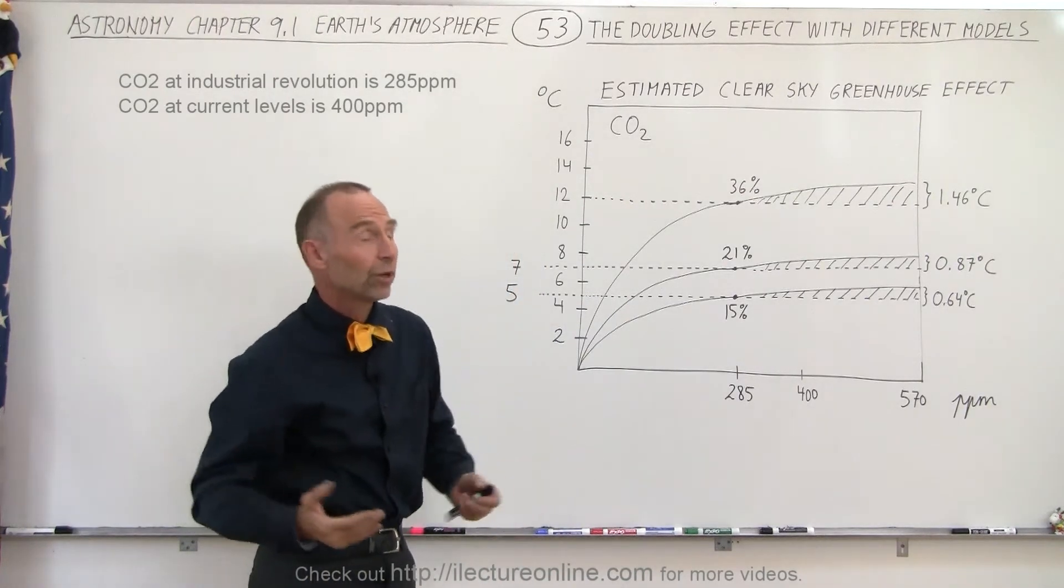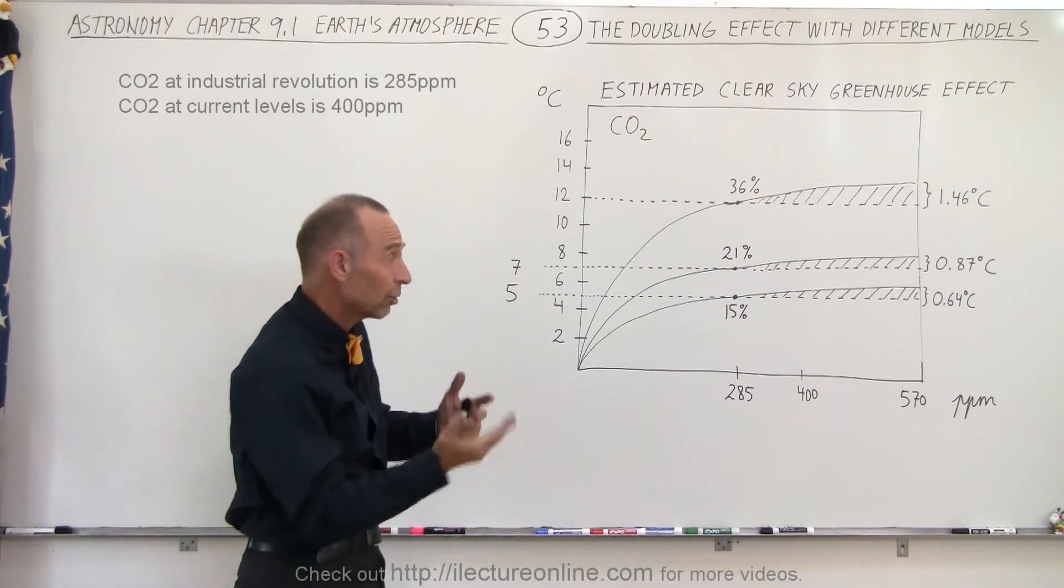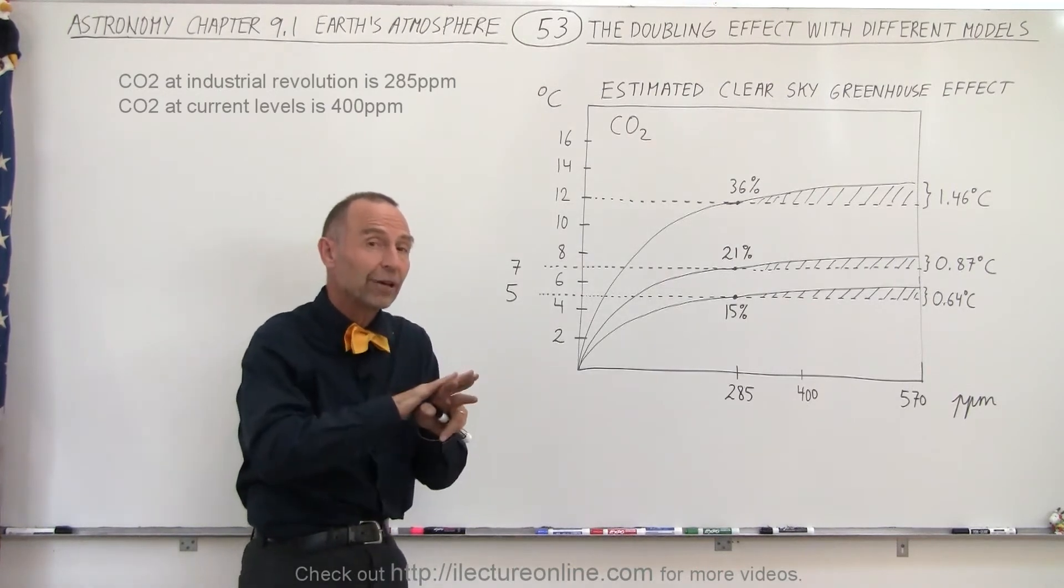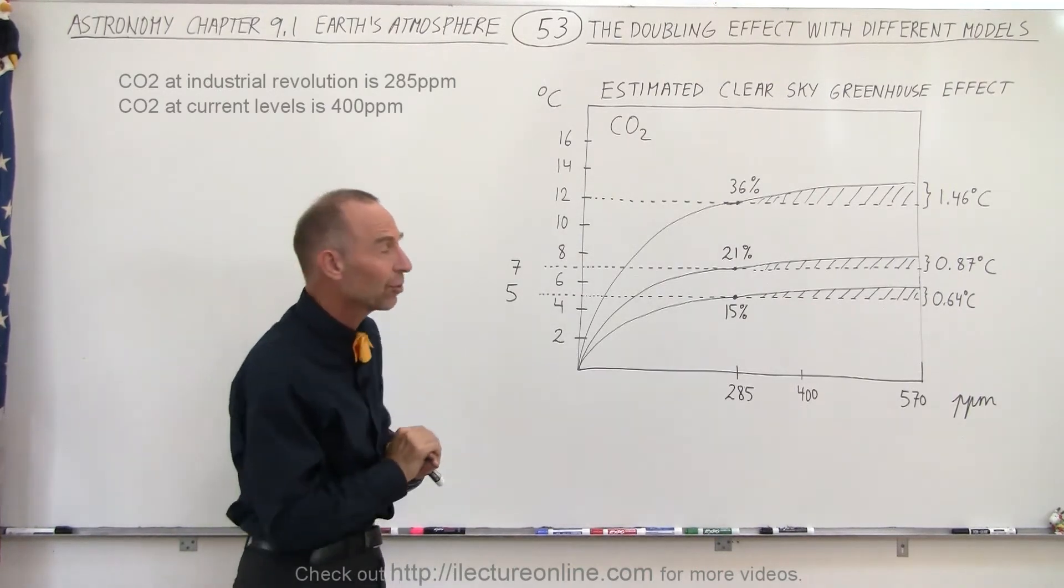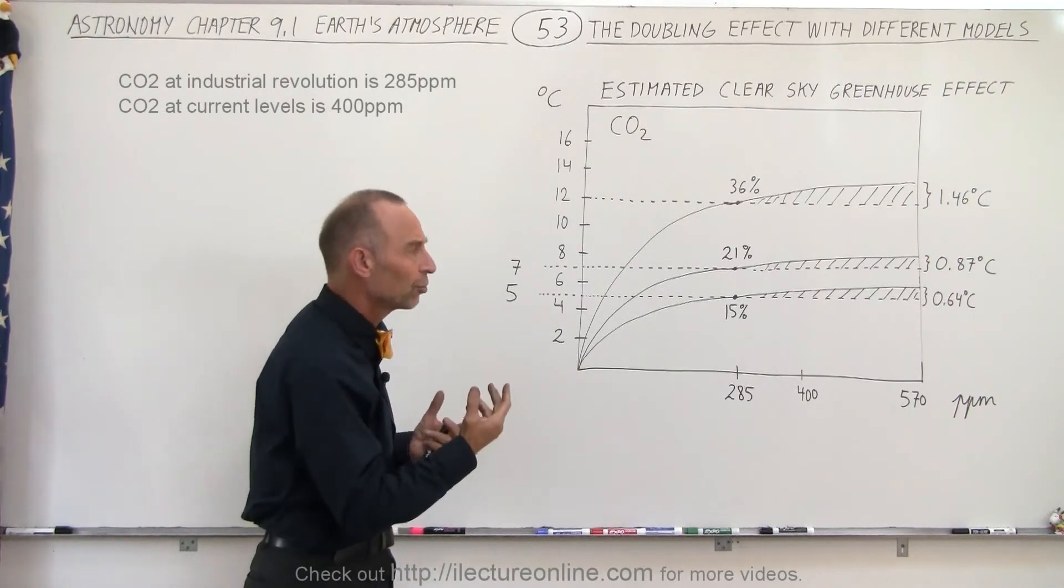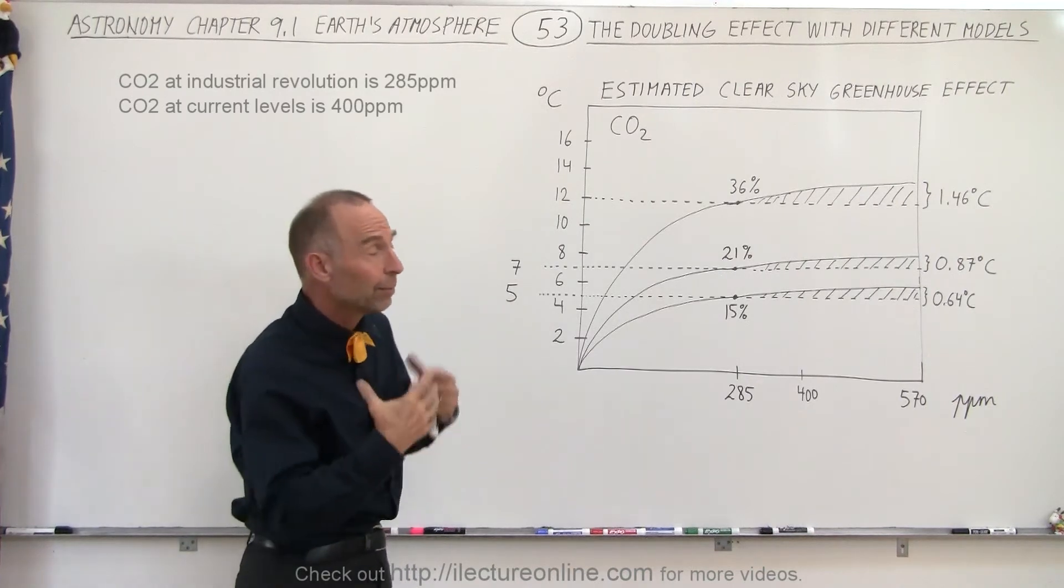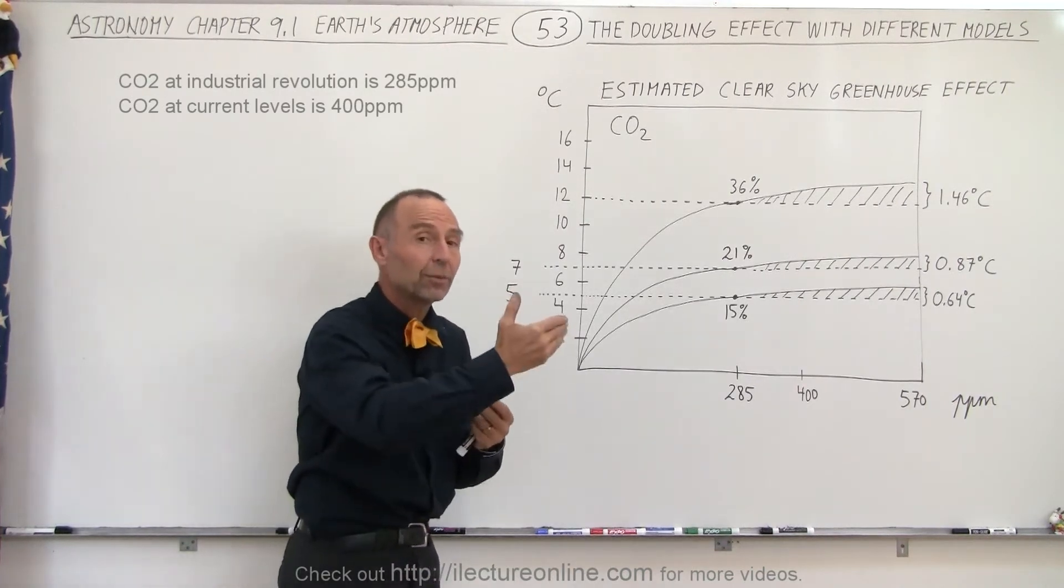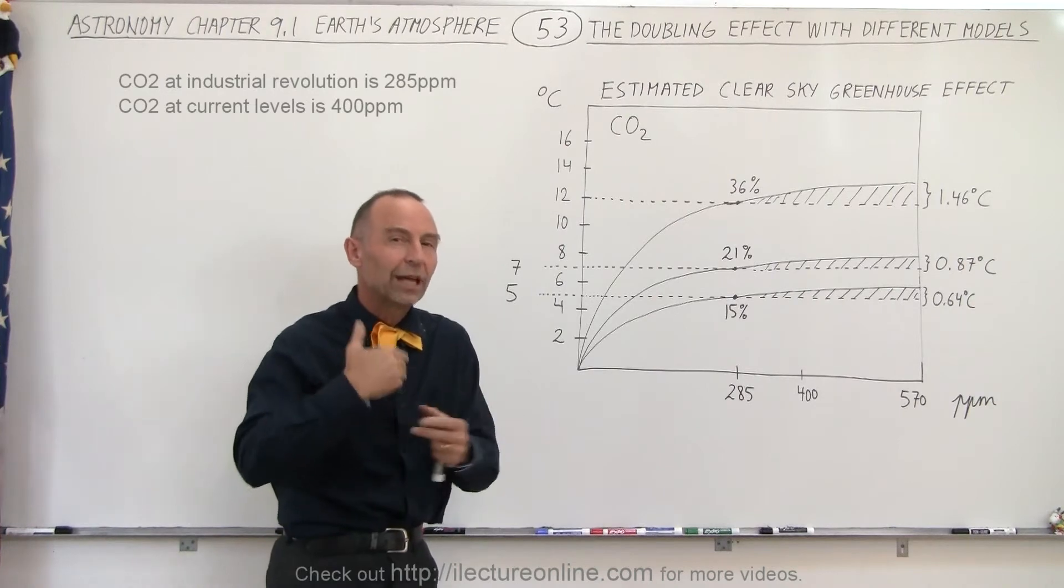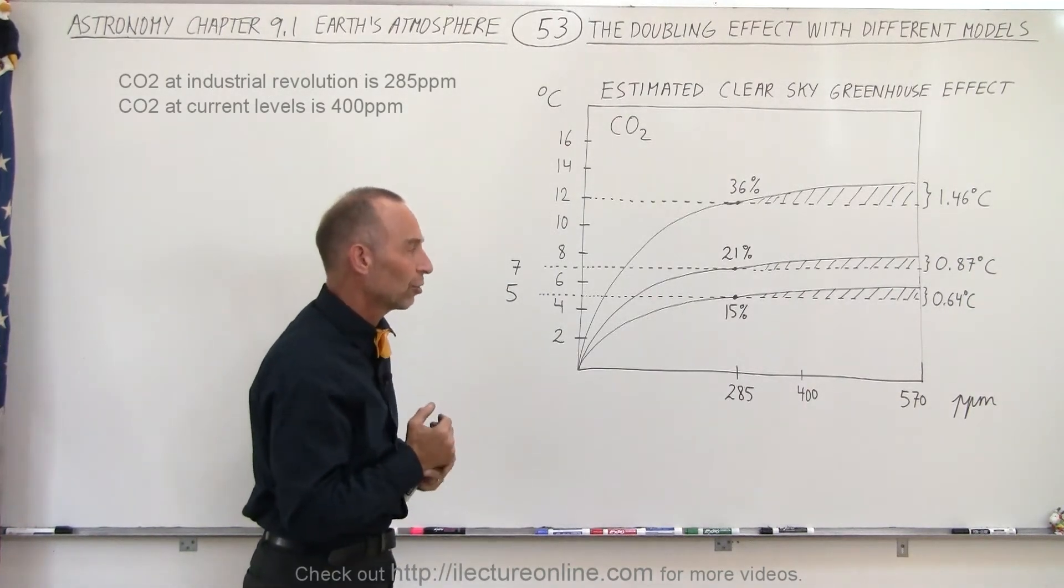The question is which one is correct and why? Did they consider the fact that water vapor and carbon dioxide overlap? Are there other things included in the assumptions that may not be directly attributable to carbon dioxide, but because of the increase in carbon dioxide, will that affect other things that then include an increase in temperatures as well?